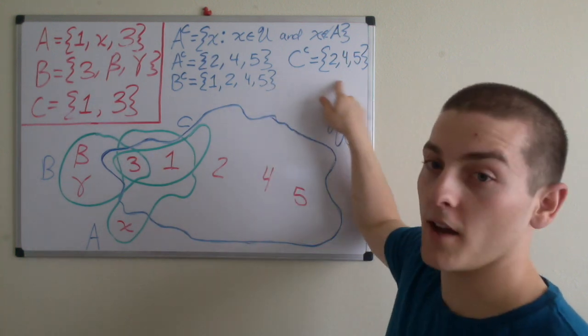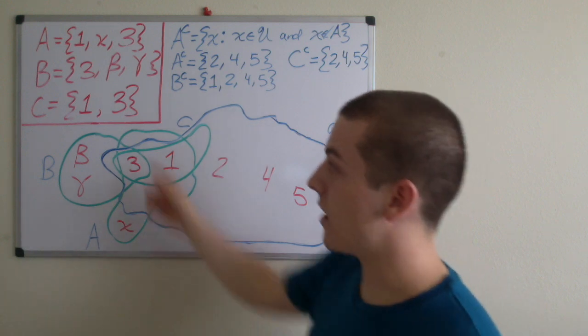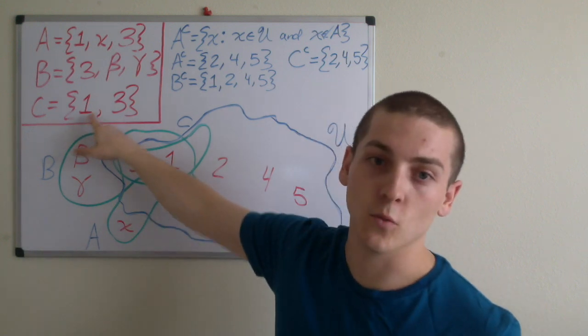And lastly we have C complement. Two, four, and five are within the universe and they're not within C because we had to exclude one and three.